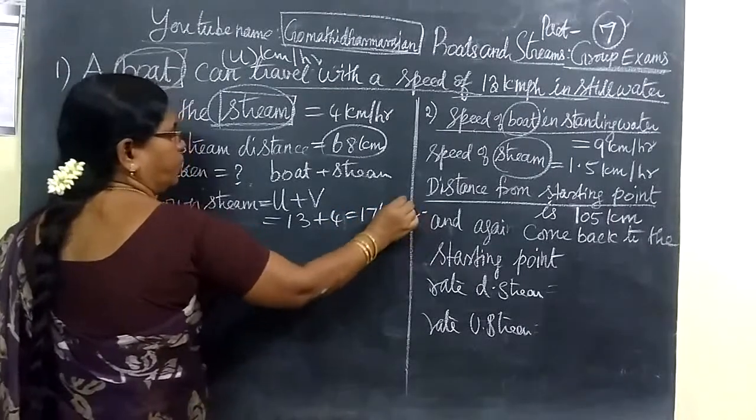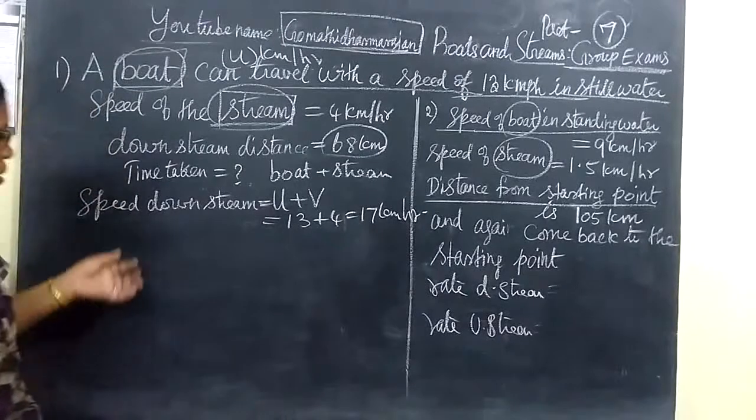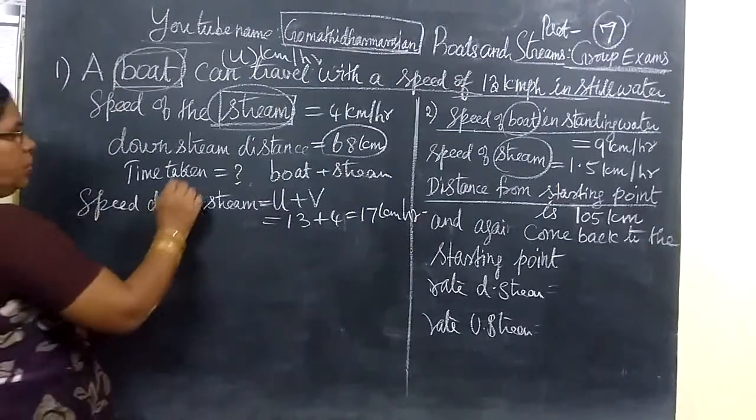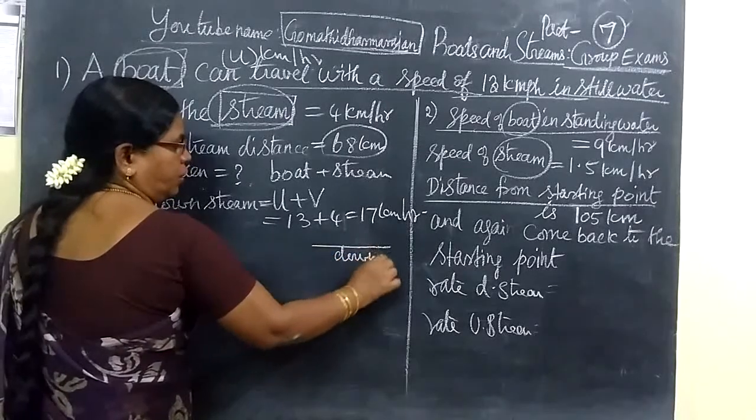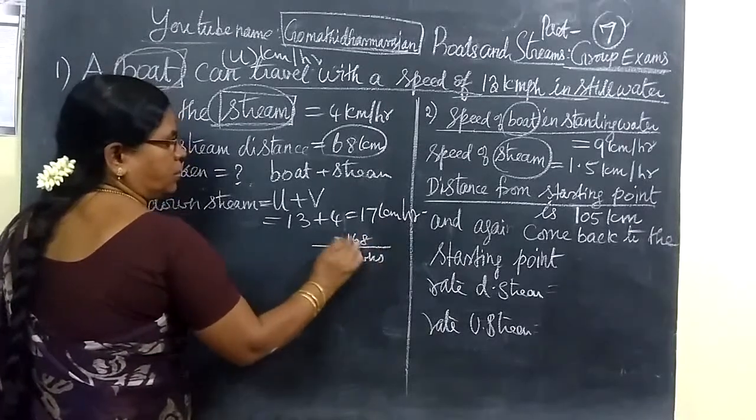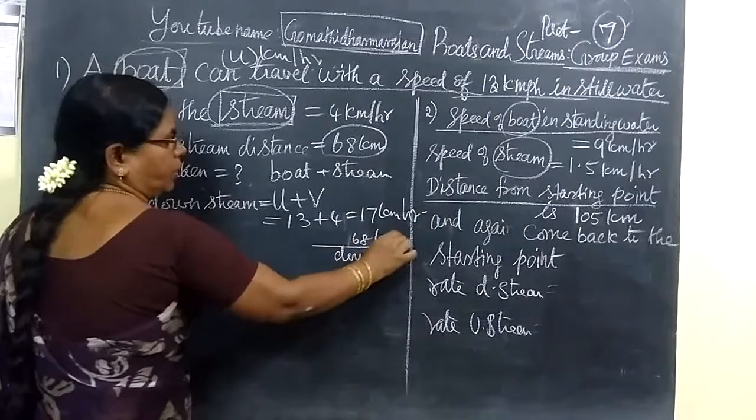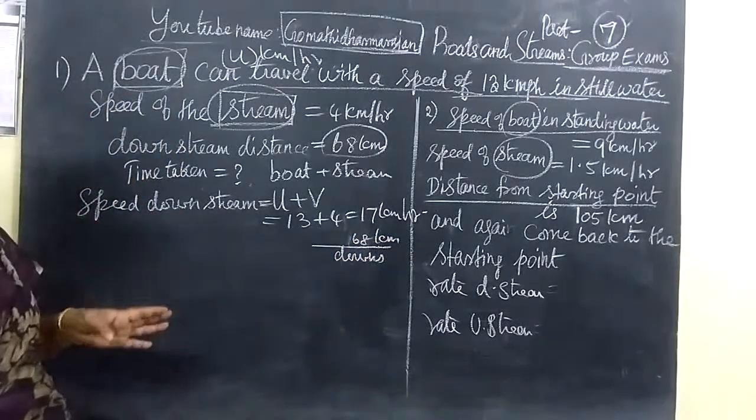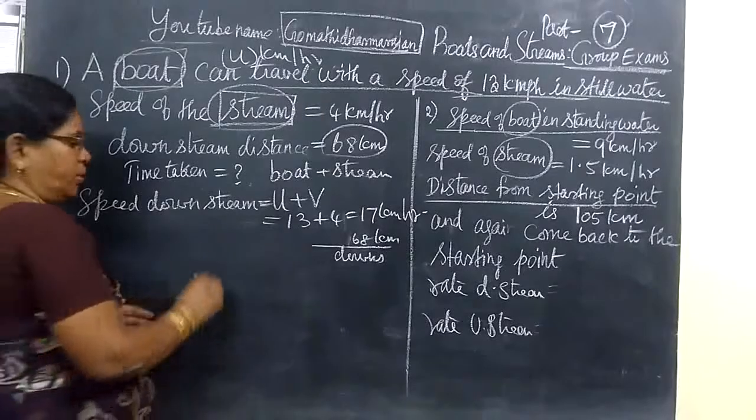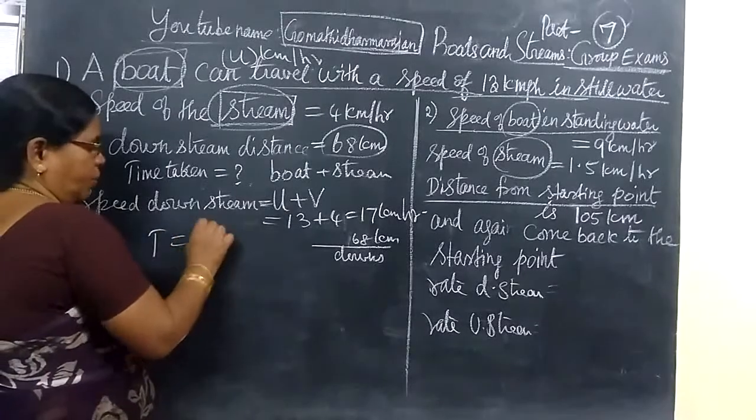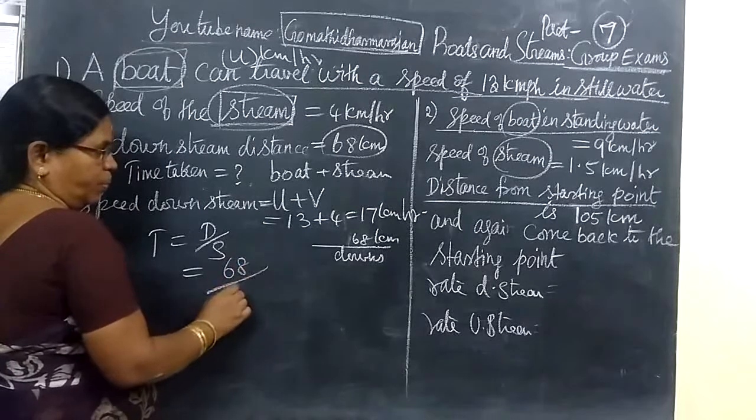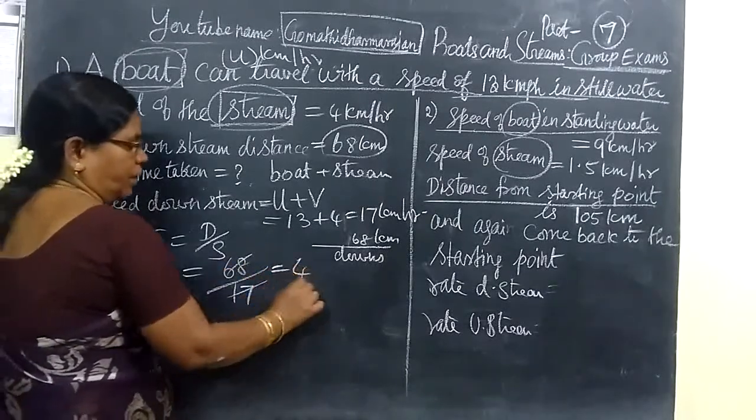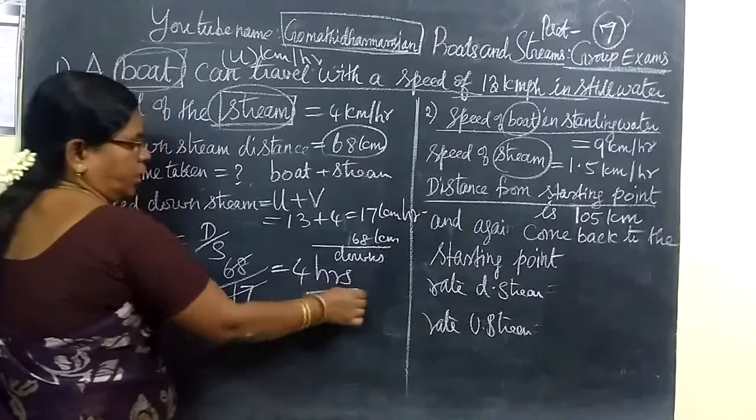Kilometers per hour you have to write since it refers to speed. The distance covered in the downstream is 68 km, and we have to find the time taken to cover 68 km. Time equals distance by speed. Distance is 68 by speed 17 km per hour. If we cancel, we are getting 4 hours.